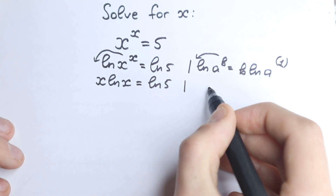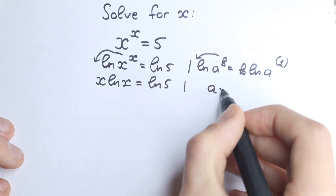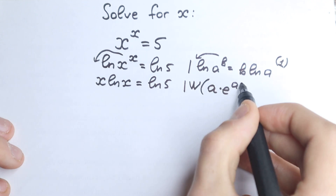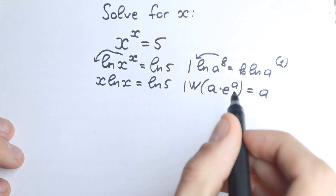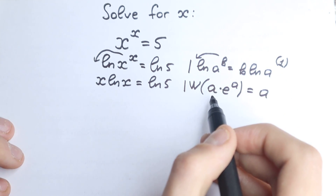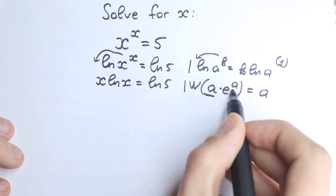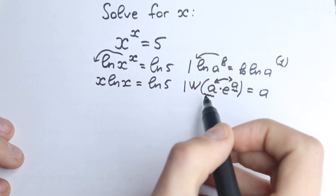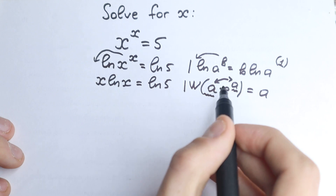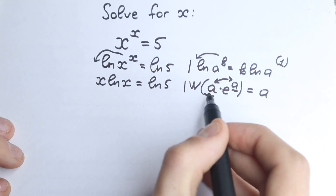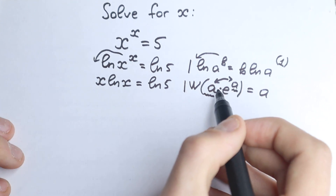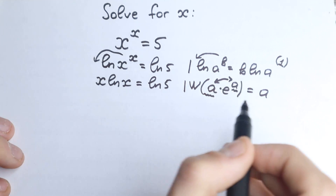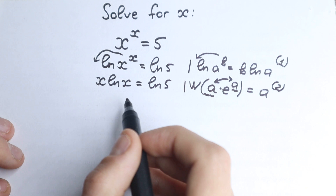Just imagine you have an expression like a times e to the power a. If you apply the Lambert W function to this expression, the result is equal to a, where a can be whatever expression you want — it doesn't matter. You need to have e and the same expression in both places — the same expression here and here. Maybe a square root, maybe sine, cosine — doesn't matter. You need e and the same expression. This is the second really important trick in our solution.